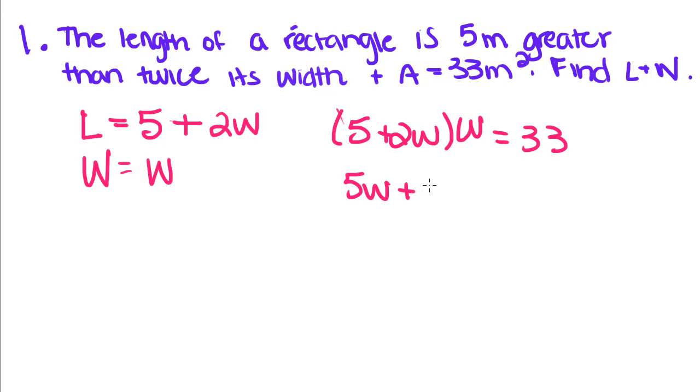If we distribute this W we get 5W plus 2W squared equals 33. Now we're going to set this equation equal to 0 and I'm going to rewrite this in decreasing order.